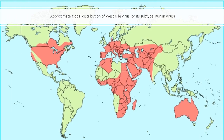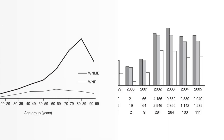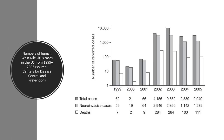This is an image of the approximate global distribution of West Nile Virus. This chart shows incidents of West Nile Virus neuroinvasive disease by age, and the numbers of human West Nile Virus cases in the US from 1999 to 2005.